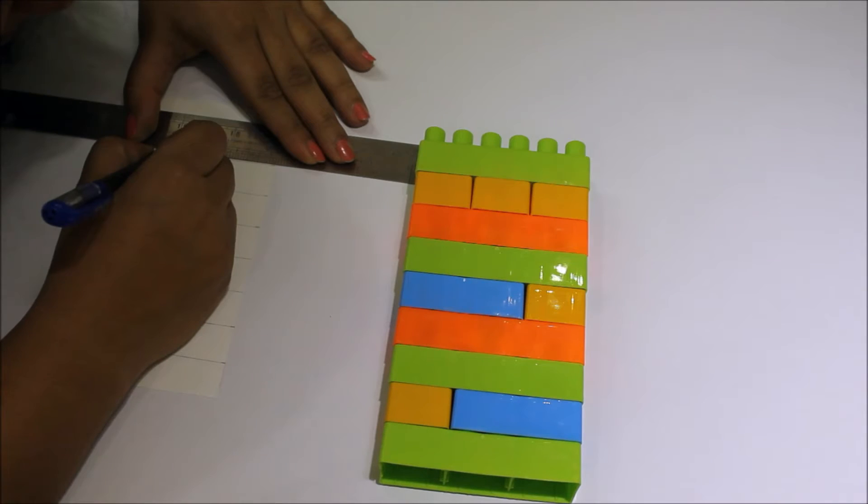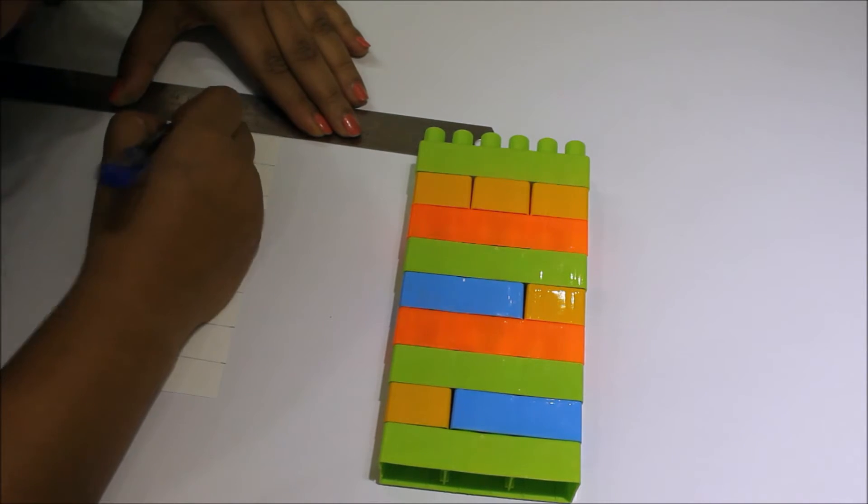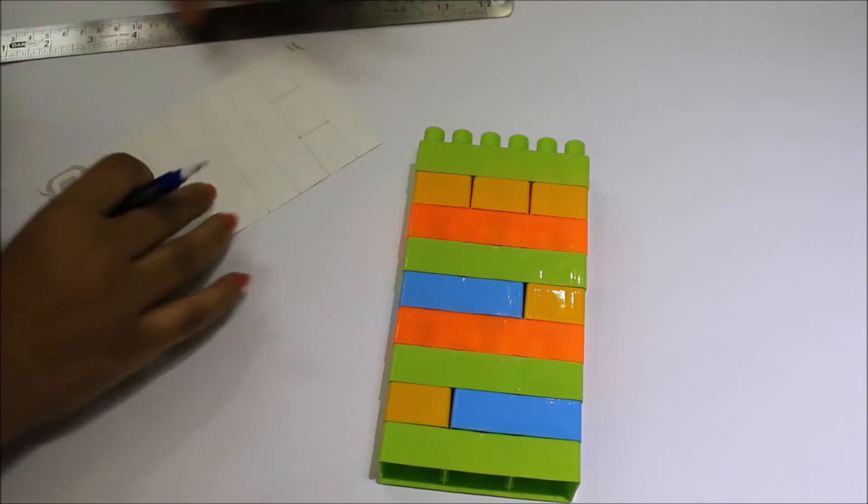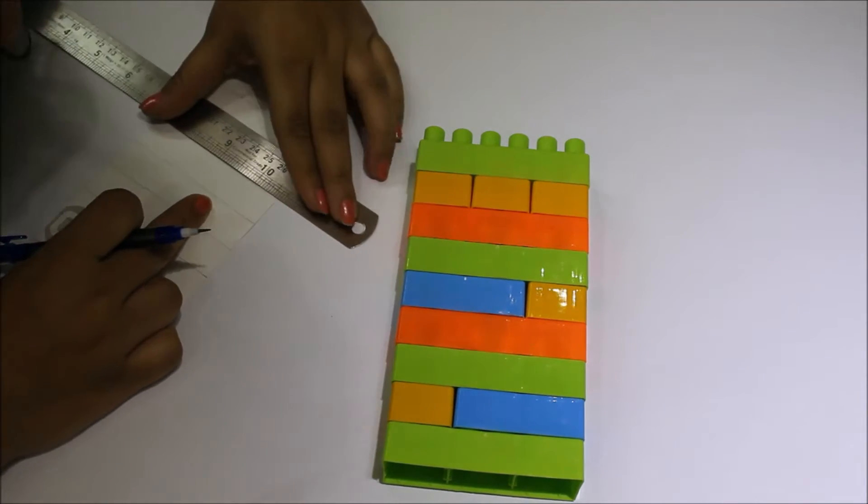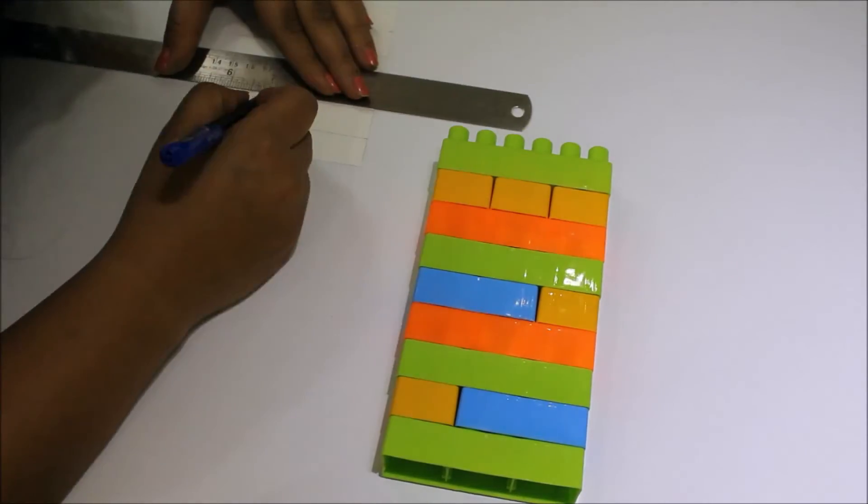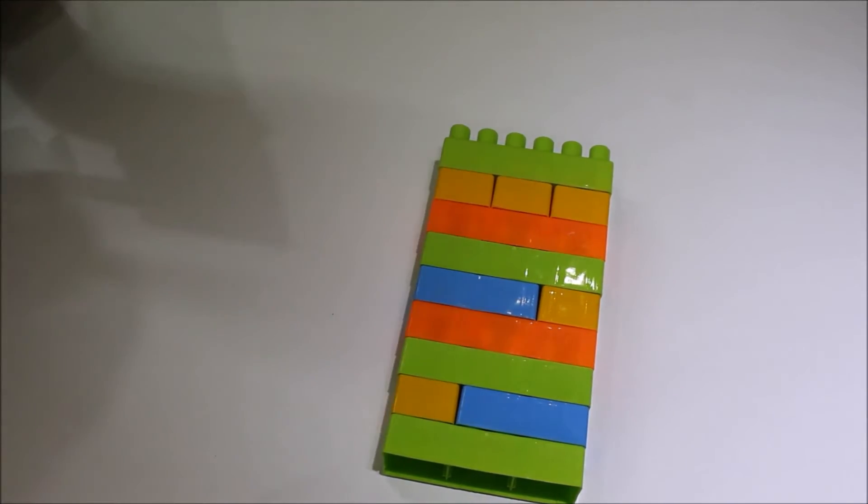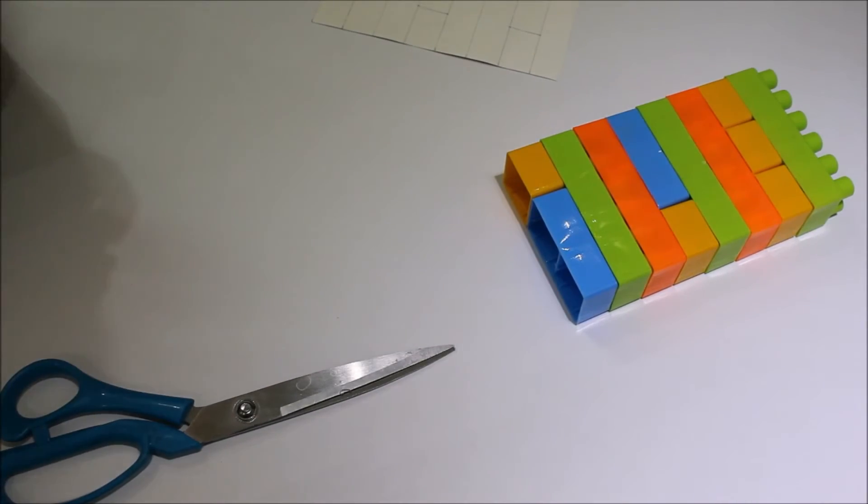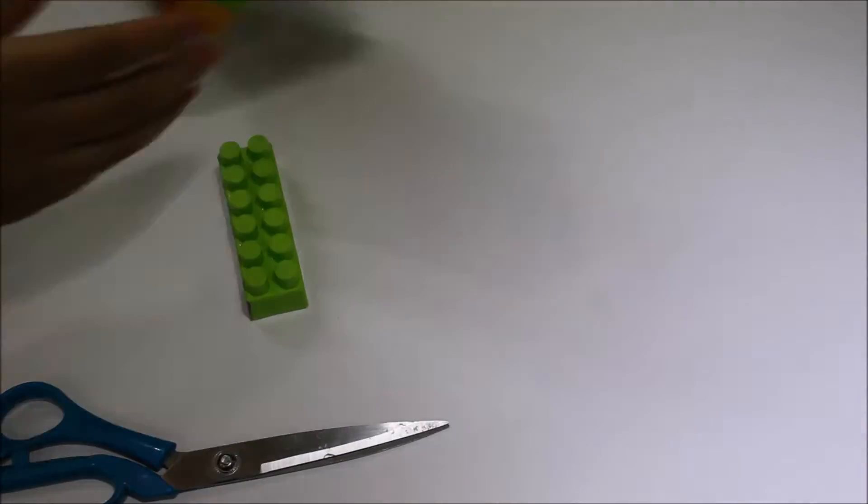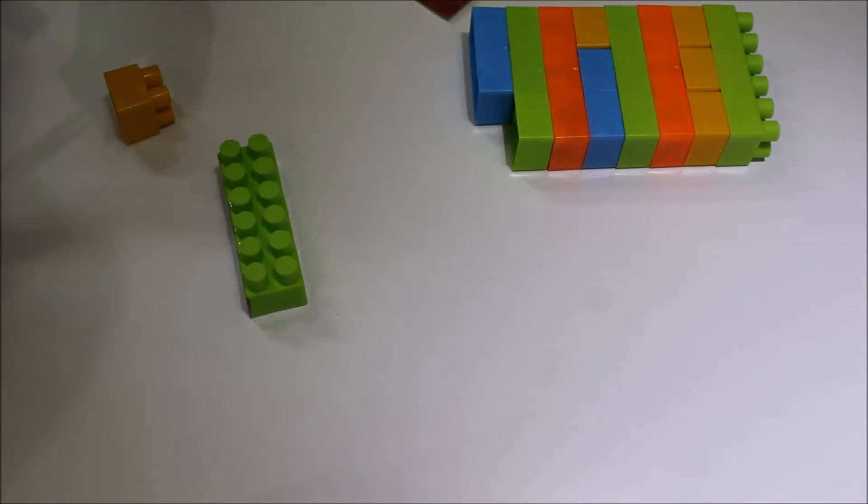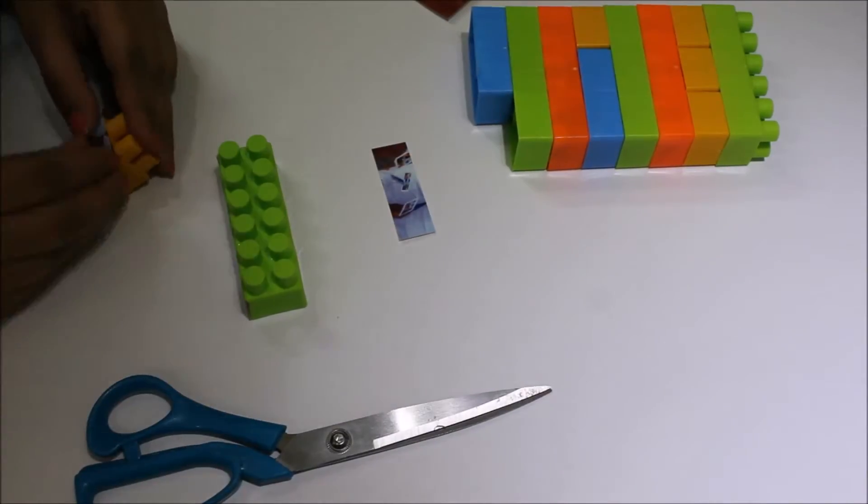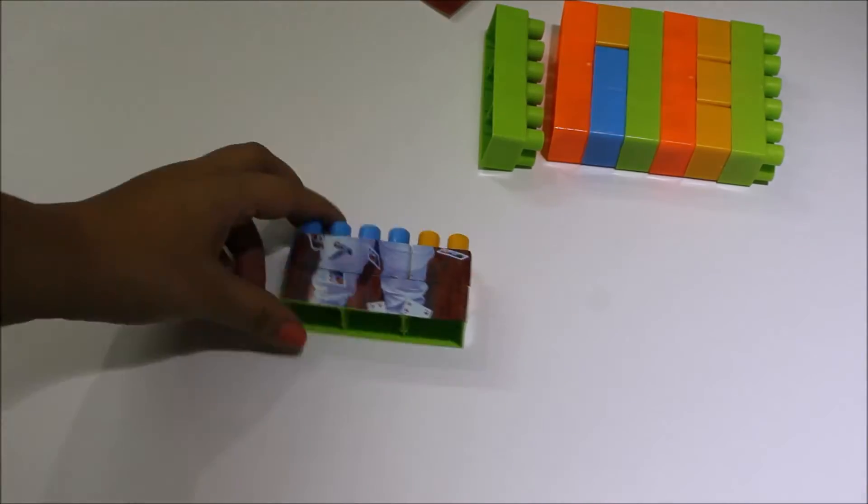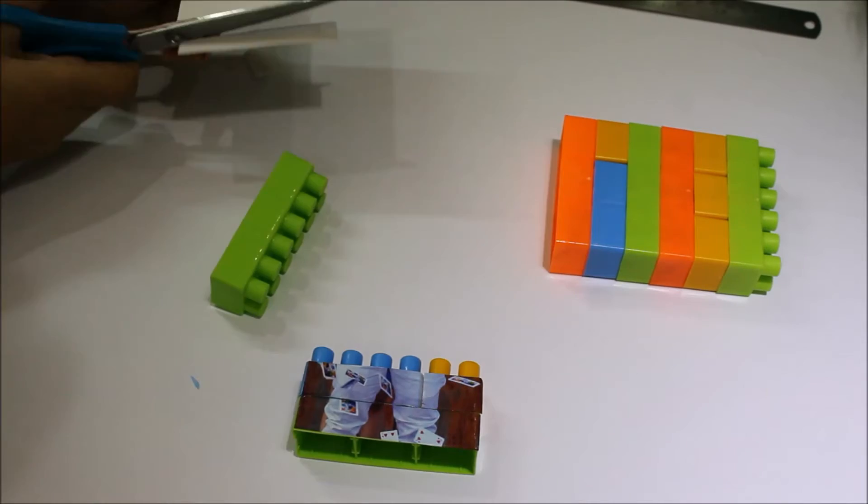Next, I would measure the blocks and then mark it on the back of the photograph. Once I'm done marking, I'll start cutting the photo row by row and sticking it on each of the blocks. I've used a sticker photo so that I do not have to make a mess of using glue. You can do the same by getting a photo printed on a sticker sheet or you can use glue.